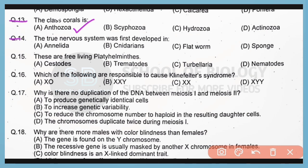Question 14. The true nervous system was first developed in Annelida. Correct answer is option A.